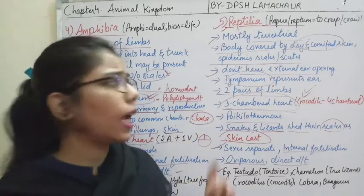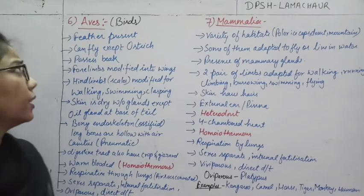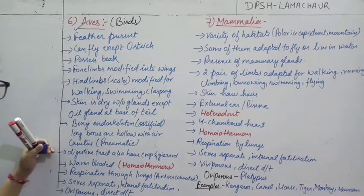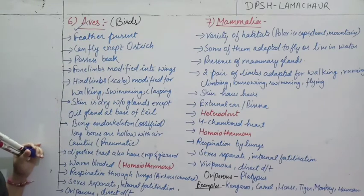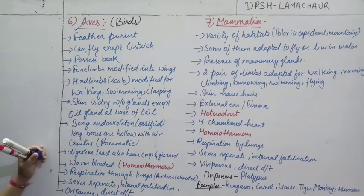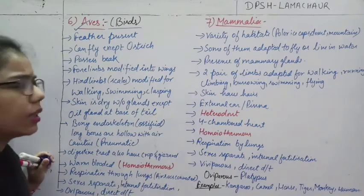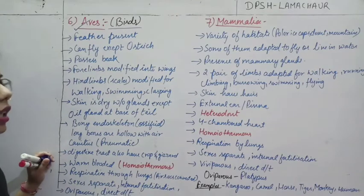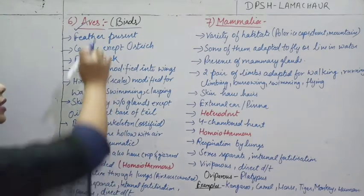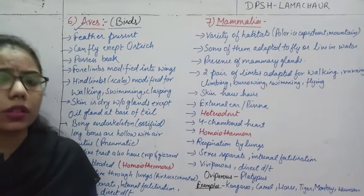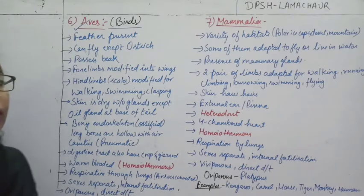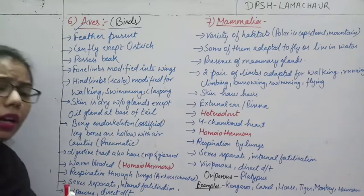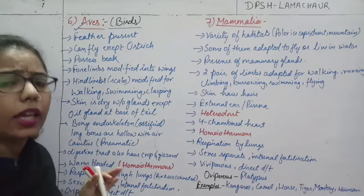Now we move to the sixth class — Aves, which also comes under Tetrapoda. All birds come under Aves. The study of birds is known as ornithology. An important point: Ostrich is a flightless bird. Birds possess a beak — a characteristic of the Aves class.